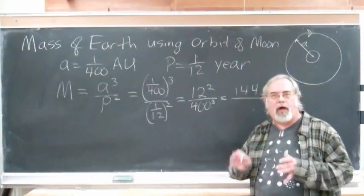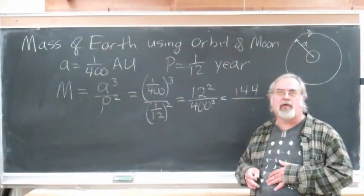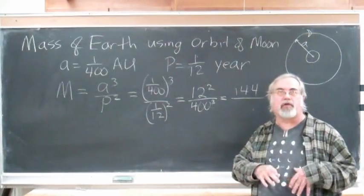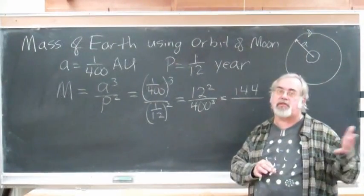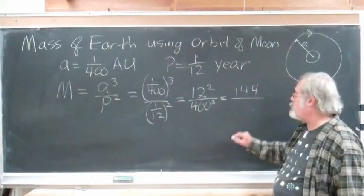Okay, a little harder. What's 400 cubed? Well, 100 cubed would be a million. And 4 cubed would be 4 times 4 is 16, 4 times 16 is 64. So, 64 million.